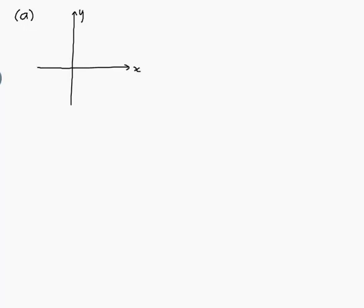Let me do part a. Here's the y-axis and here's the x-axis. We have the point 4, 5 — going across 1, 2, 3, 4 and up 1, 2, 3, 4, 5. So that's 4, 5 there. And we have 1, minus 1, minus 5. So minus 1 in the x direction and down to minus 5 in y. My vector has initial point 4, 5 and terminal point minus 1, minus 5.